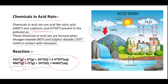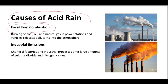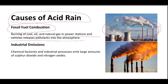The first cause of acid rain is fossil fuel combustion. Burning of coal, oil, and natural gas in power stations and vehicles releases pollutants into the atmosphere. Power plants releasing harmful gases are a major cause of acid rain.